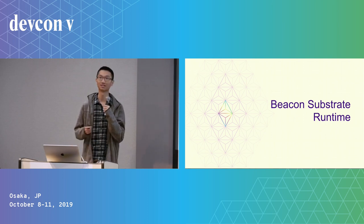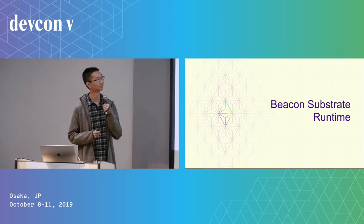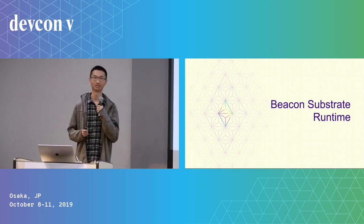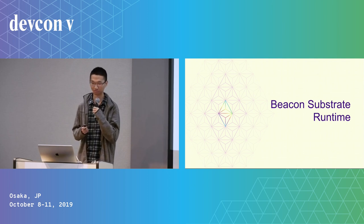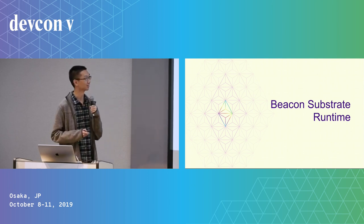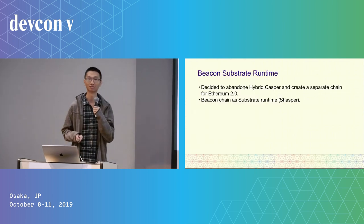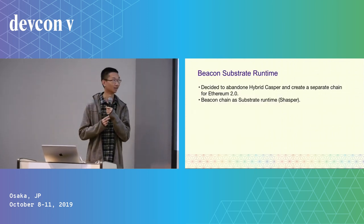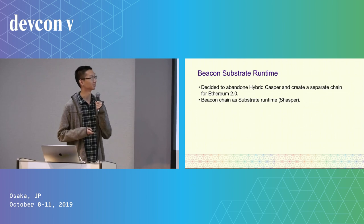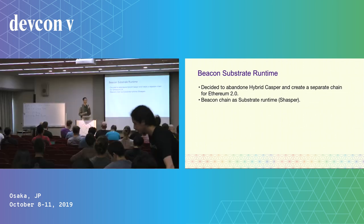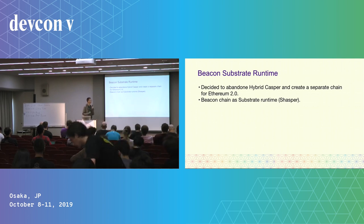But later, it came to the second phase: we decided to build a separate blockchain for Ethereum 2.0. We moved to the Beacon Substrate Runtime. For the hybrid Casper, there were some performance issues, and we had to abandon that to create a separate blockchain for Ethereum 2.0.